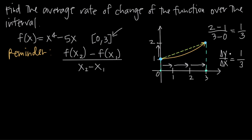The average rate of change of this function is 1 third because, on average, y is going to increase 1 unit every time x increases 3 units. We can say the y value increases by 1 third each time — up 1 third, up another 1 third, up another 1 third — over 3 units in x. We get from our starting point of 1 to our ending point of 2. So basically, if we turned our function into a straight line, what would the slope of that line be? That's what we mean by average rate of change.